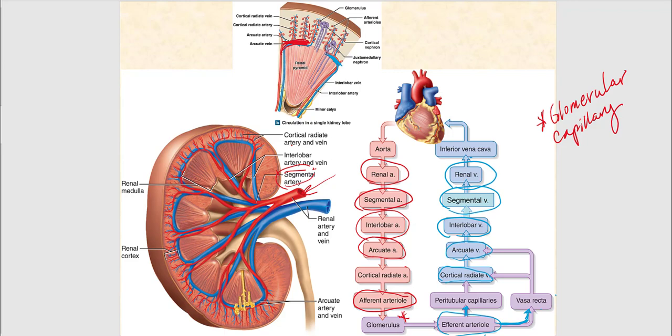The renal vein runs alongside the renal artery. The blood traveling through the renal vein has already been processed and filtered by the kidney — it just happens to be deoxygenated blood. The renal vein then drains into the inferior vena cava.